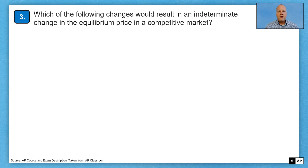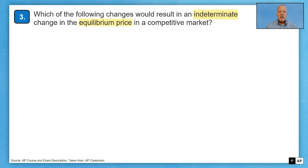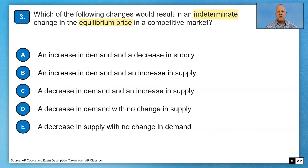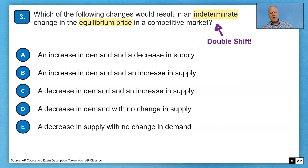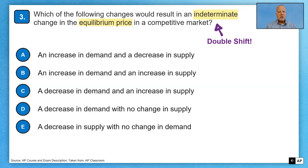Question number three: which of the following changes would result in an indeterminate change in the equilibrium price in a competitive market? That word 'indeterminate' is a big, big hint. It tells me there has to be a double shift. In a single-shift situation — just demand or just supply — we won't have an indeterminate price or quantity. So I already know this is a double shift question. Any option that's not a double shift cannot be the correct answer.